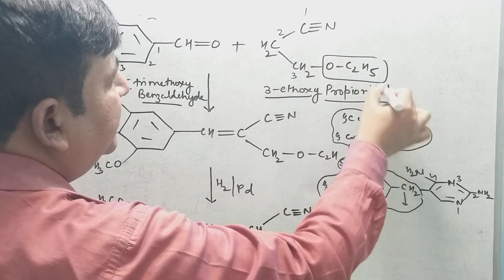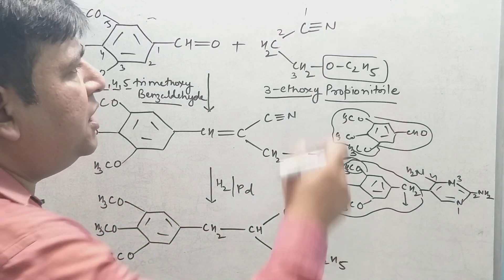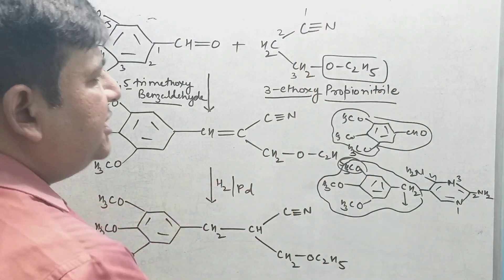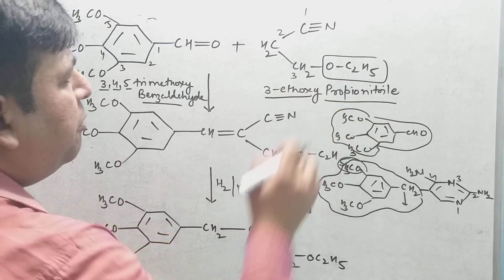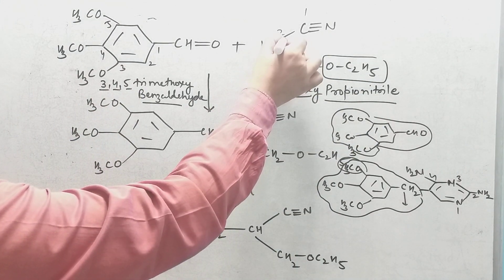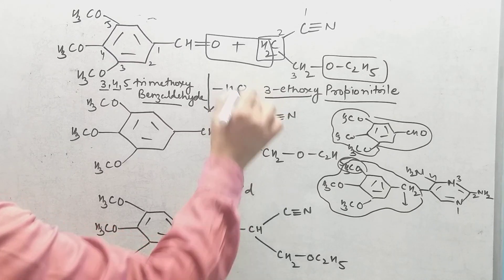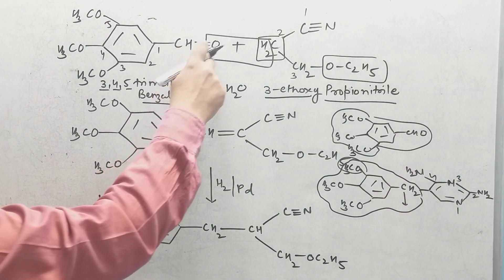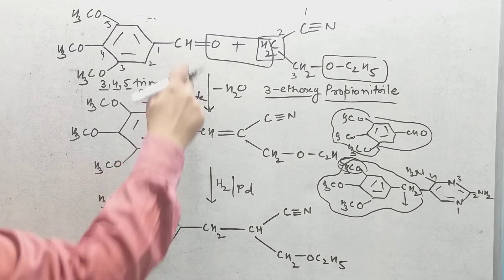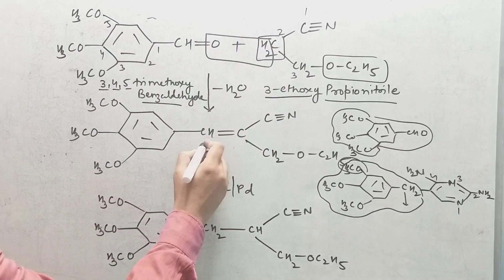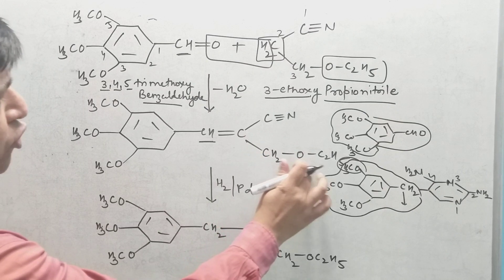The second reactant is 3-ethoxypropionitrile — it is called propionitrile because it contains three carbons, and the CN is the nitrile group, with an ethoxy group at the third position. This compound has an active methylene group that reacts with the benzaldehyde, and water is eliminated. The product has the structure: Ar-CH=C(CN)-CH2-OC2H5.